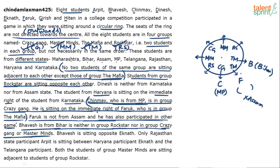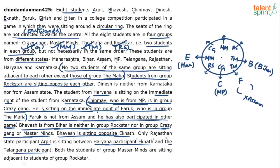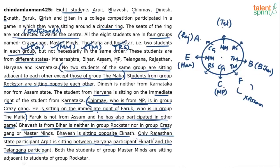Faruk was already the known Mafia member, so Bhavesh is the second. Now, Arpit is the Rajasthan state participant, and he is sitting between the Haryana participant Eknath and the Telangana participant. So the order is Haryana (Eknath), Rajasthan (Arpit), Telangana. Since Chinmay is already at MP, Telangana cannot be on that side, so Telangana is placed on the other side. Arpit is in the Rajasthan seat, and who is from Telangana will be figured out. Also, student from Haryana is on the immediate right of Karnataka, so Karnataka is placed to the immediate left of Eknath.